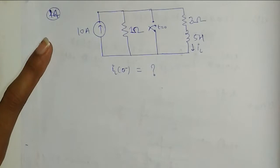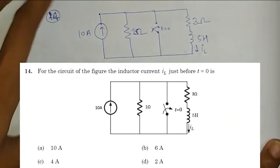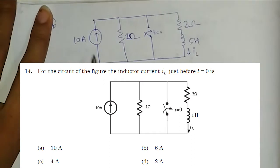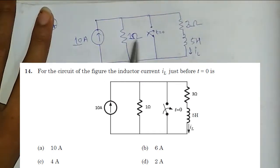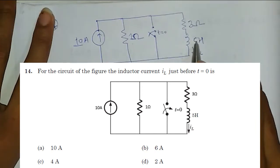Hello friends, welcome to GateGyaan. In this question, a network is given. 10 ampere current is flowing, this resistance is 1 ohm, 3 ohm, and this inductor value is 5 Henry.